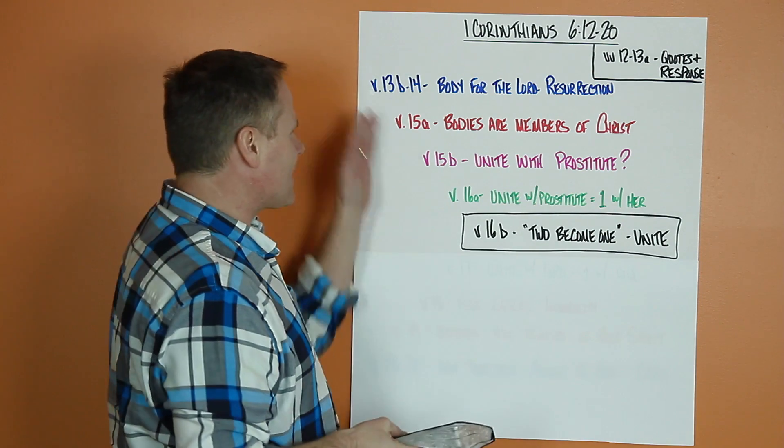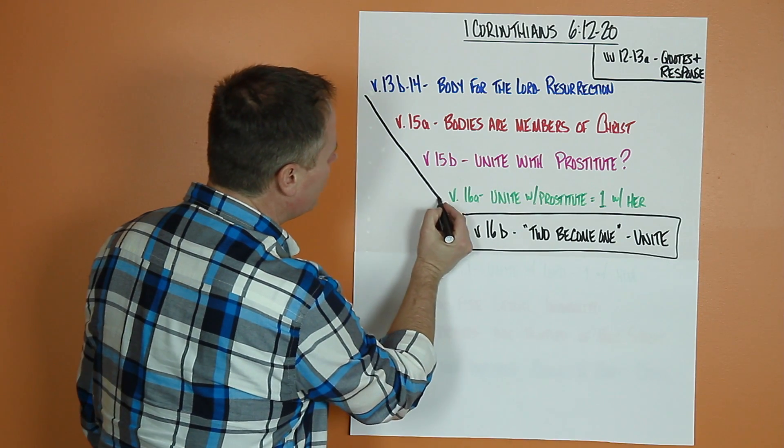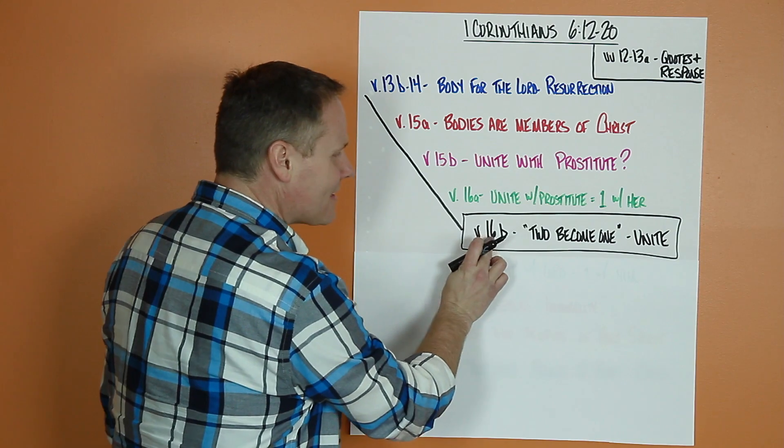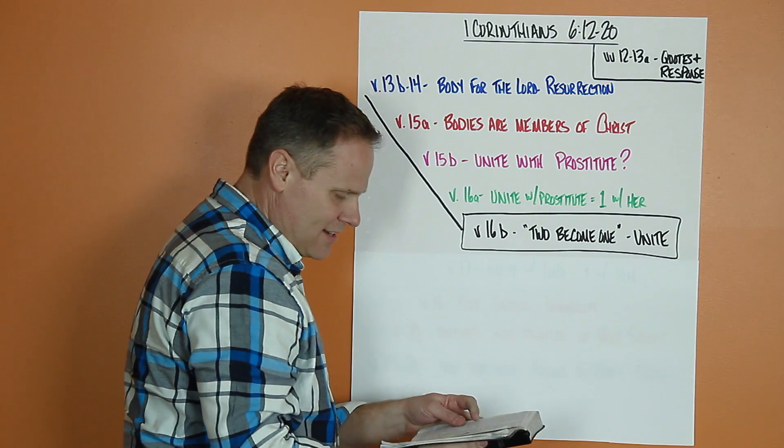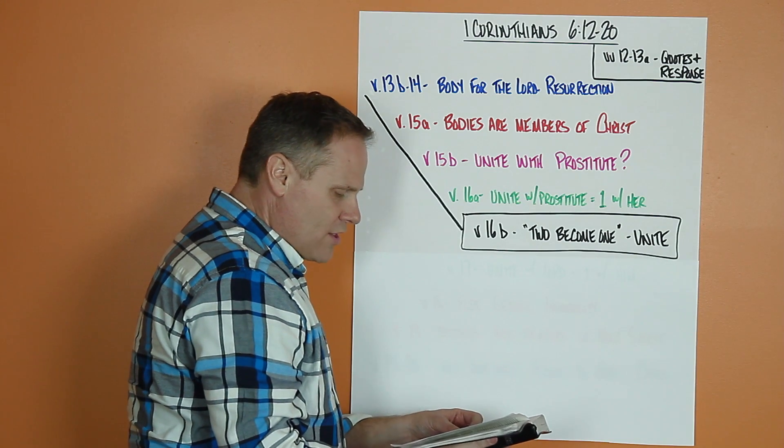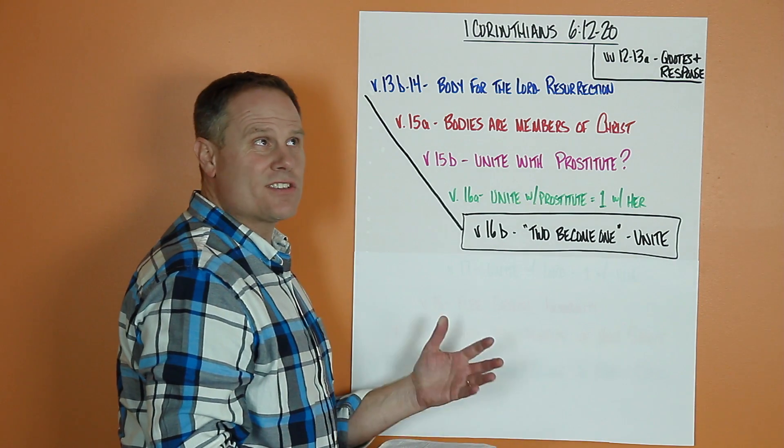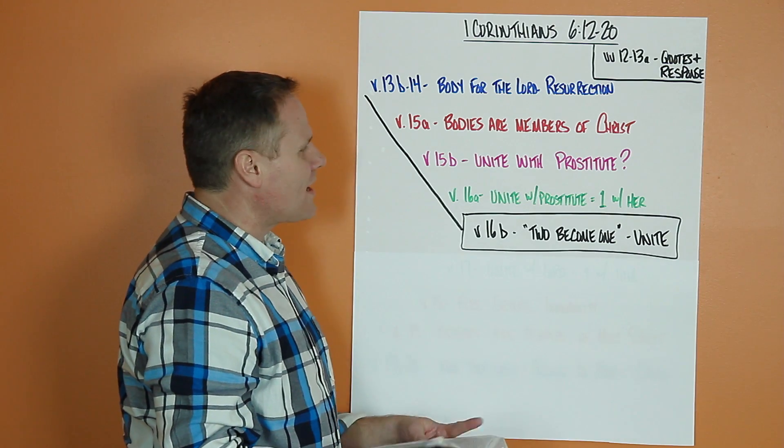So that's the first half of this chiastic structure that Paul uses, just moving towards a point. And his point is in the second half of verse 16, which is a quote from the Old Testament: the two will become one flesh. That's a quote from Genesis 2, 24. The two will become one flesh.